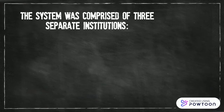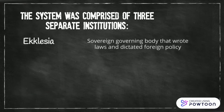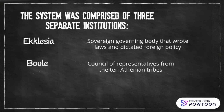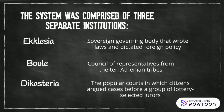The system was comprised of three separate institutions: Ecclesia, the sovereign governing body that wrote laws and dictated foreign policy; Bule, a council of representatives from ten Athenian tribes; and Dicasteria, the popular courts in which citizens argued cases before a group of lottery-selected jurors.